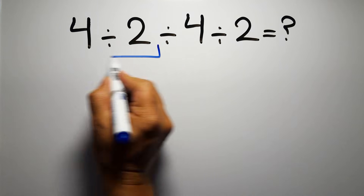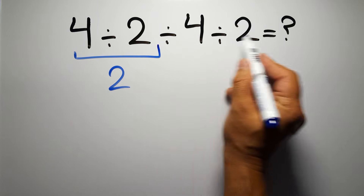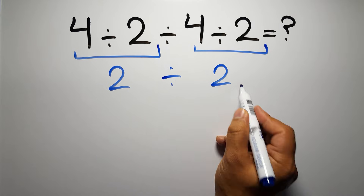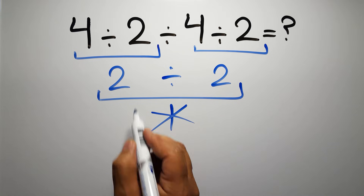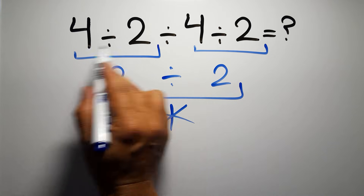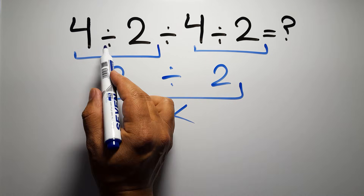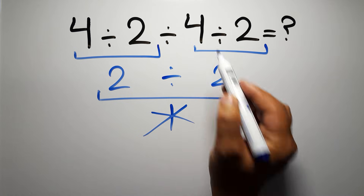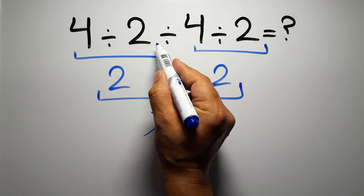4 divided by 2 gives us 2, and again here we have 4 divided by 2. So 2 divided by 2 is just 1, but this answer is not correct. According to the order of operations, when we have more than one division in an expression, we have to work from left to right. So here, first we have to do this division, then this division, and finally this division. If we do this division before this division, it is wrong.